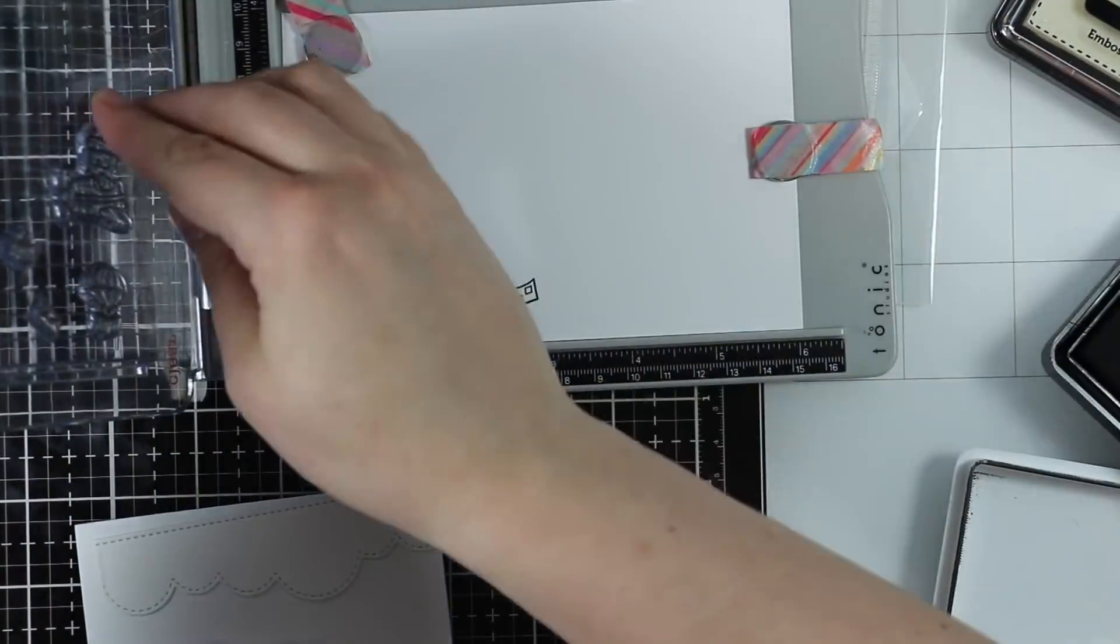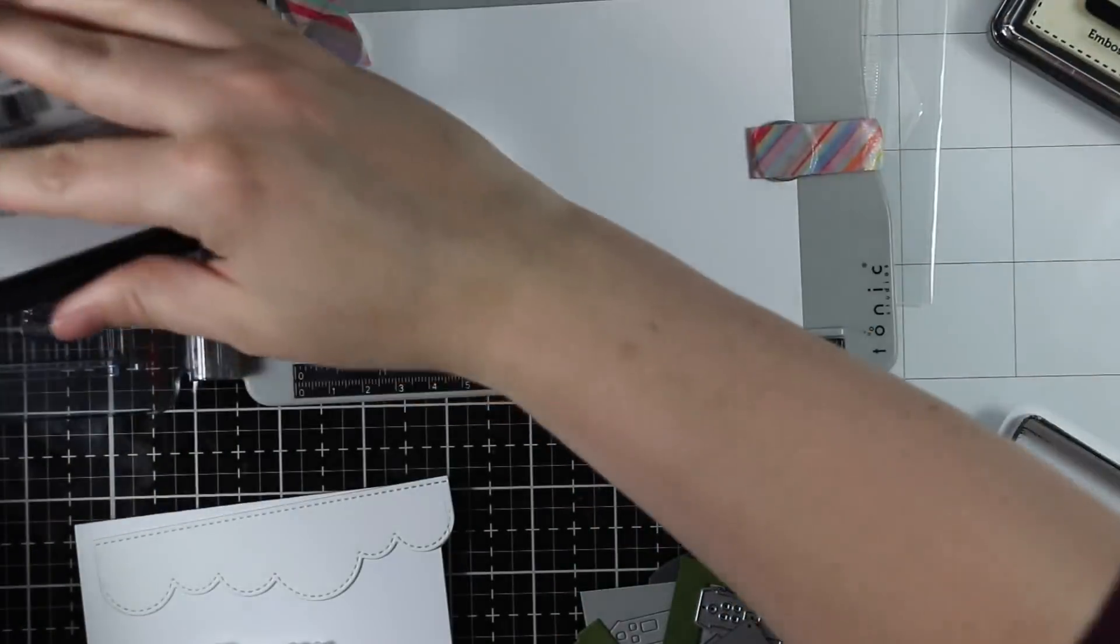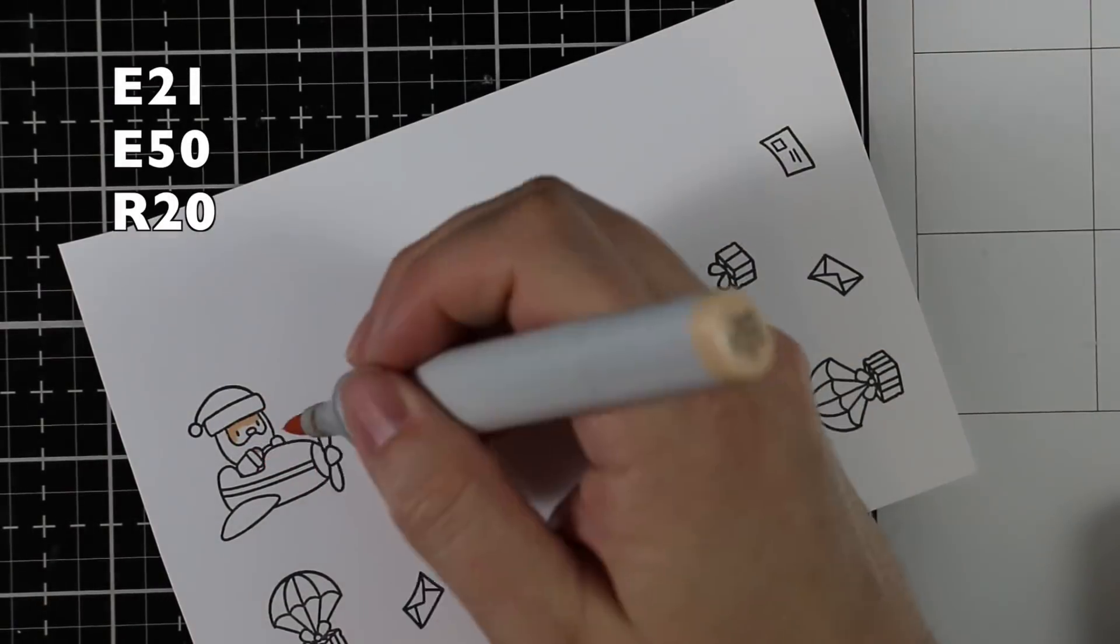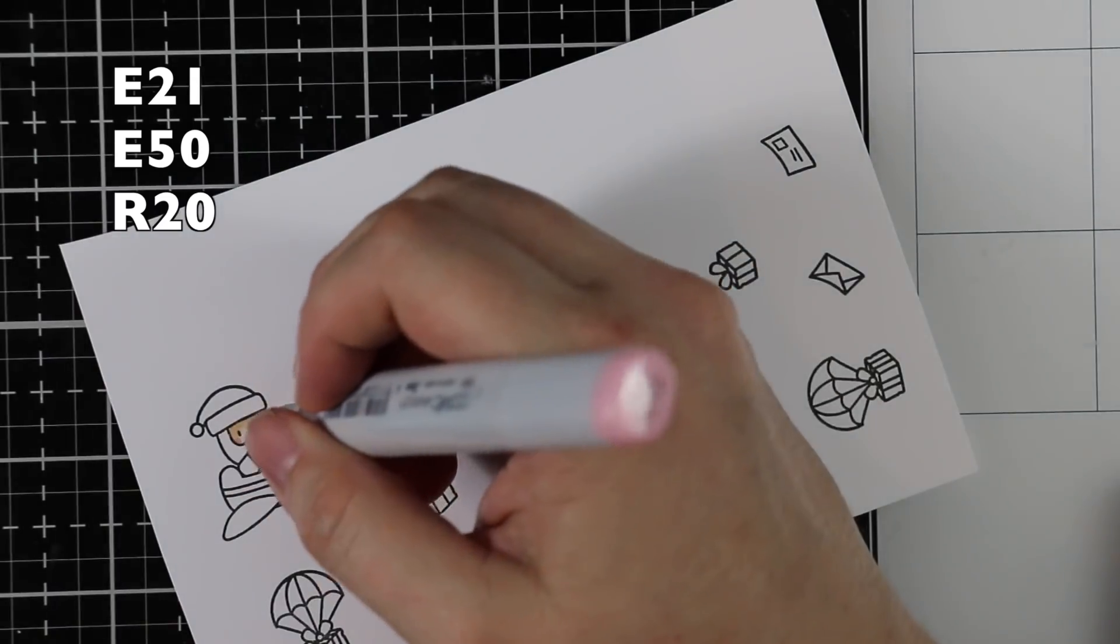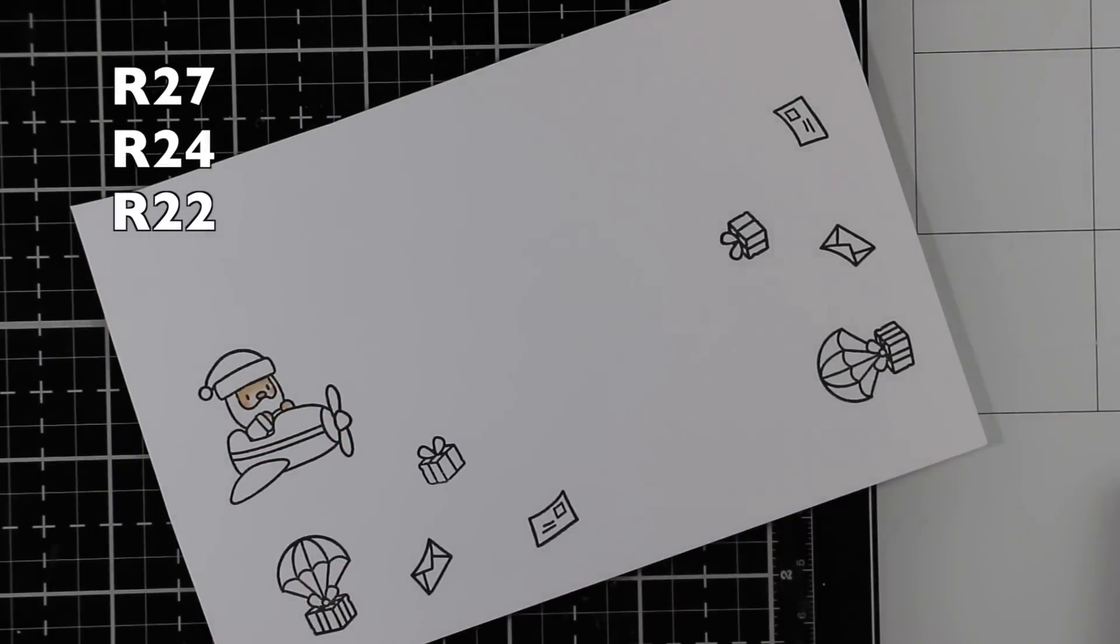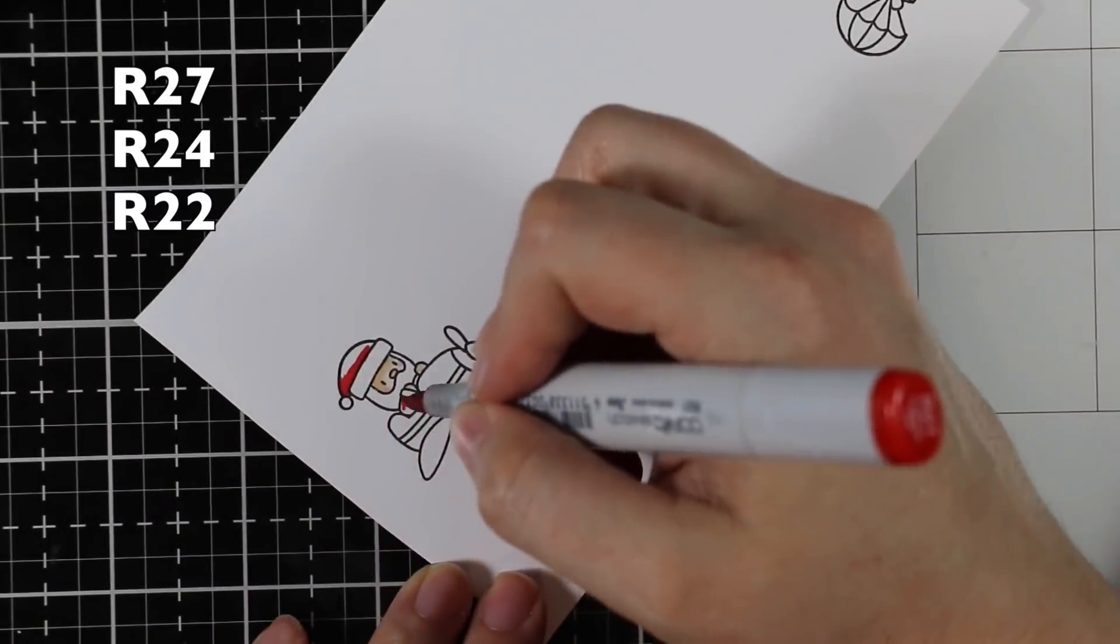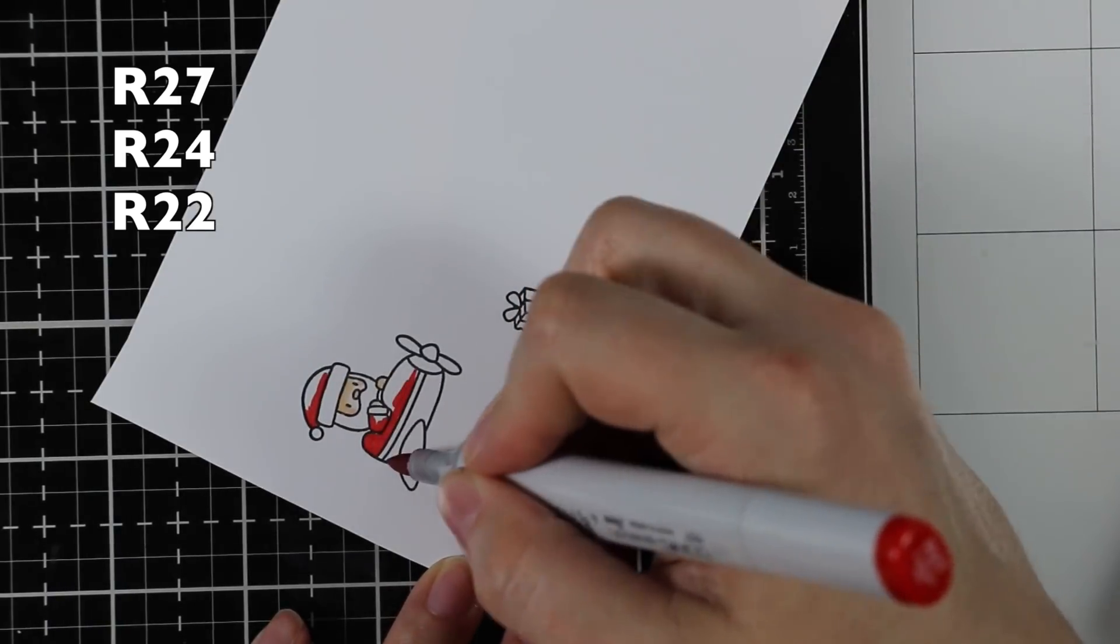This set is super adorable with so many ideas. I hoard Mama Elephant like I do pattern paper, Lawn Fawn, and all the other stuff. But because it's limited edition, I wanted to actually ink it up and use it before it's gone.